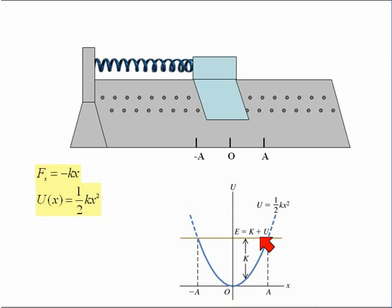The vertical distance between the plots of U and E at any point gives us the kinetic energy K of the glider at that point. Note that the kinetic energy is a maximum at x equals naught, the equilibrium position, and zero where the two graphs cross.